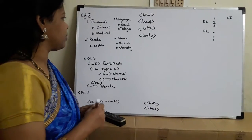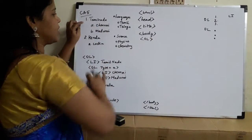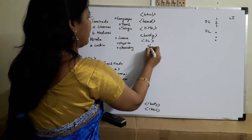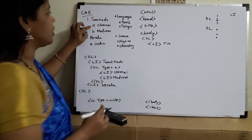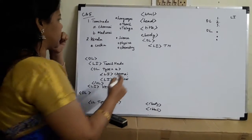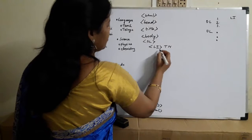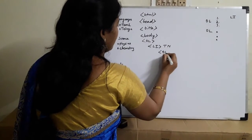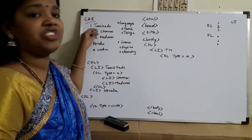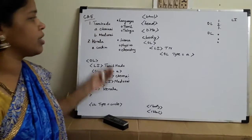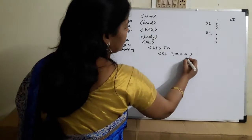Now we will see how to write the program. The first one is OL, the ordered list. The first item is Tamil Nadu, listed using the LI tag. Within Tamil Nadu, I am going to display two contents using type=A. If you write type equal to A, the contents will be displayed like A for Chennai, B for Madurai, and so on. You can also use Roman numerals or lowercase letters — different formats are available.